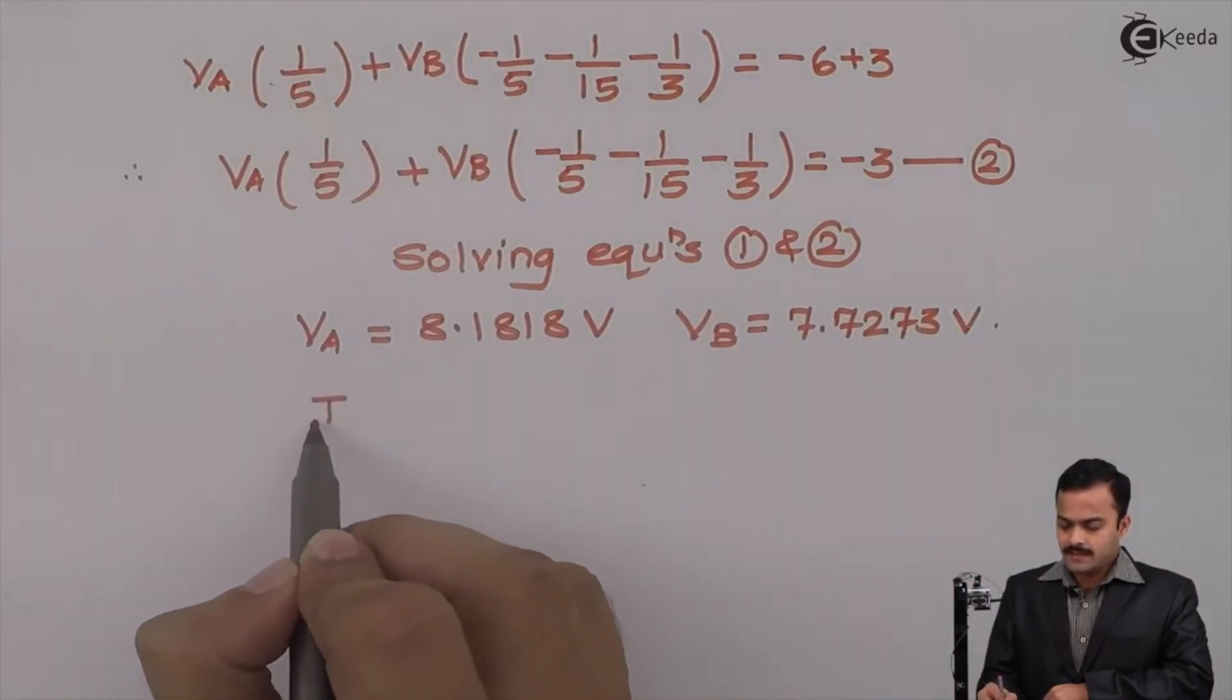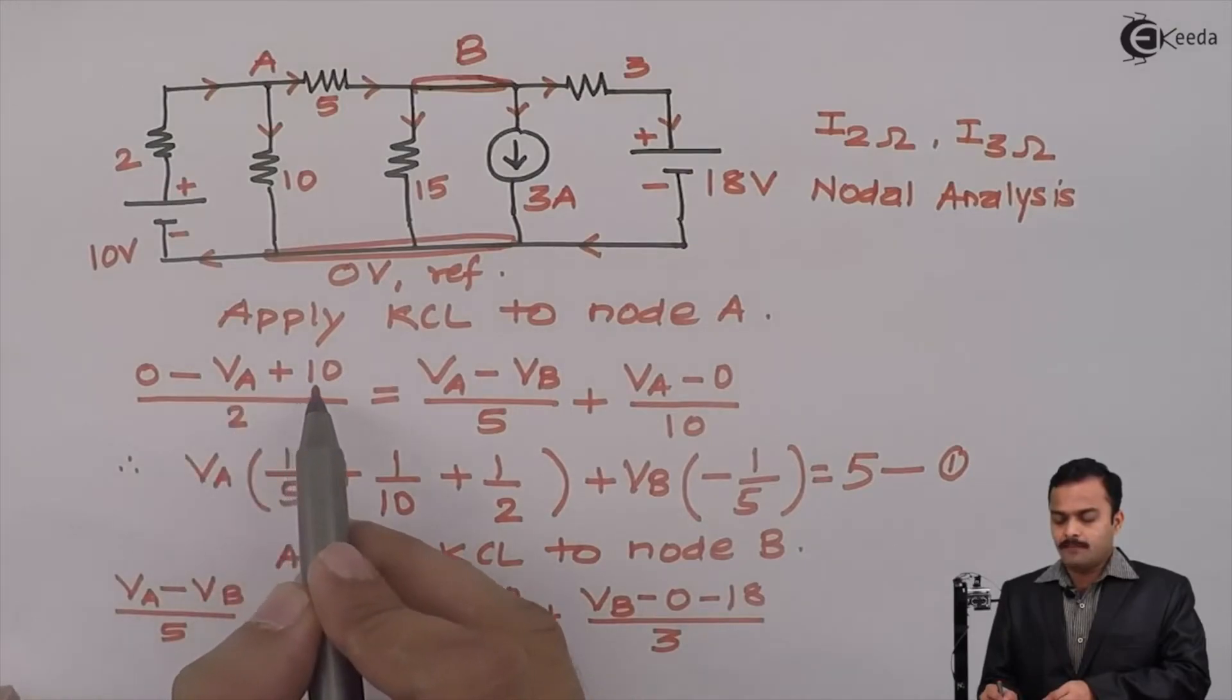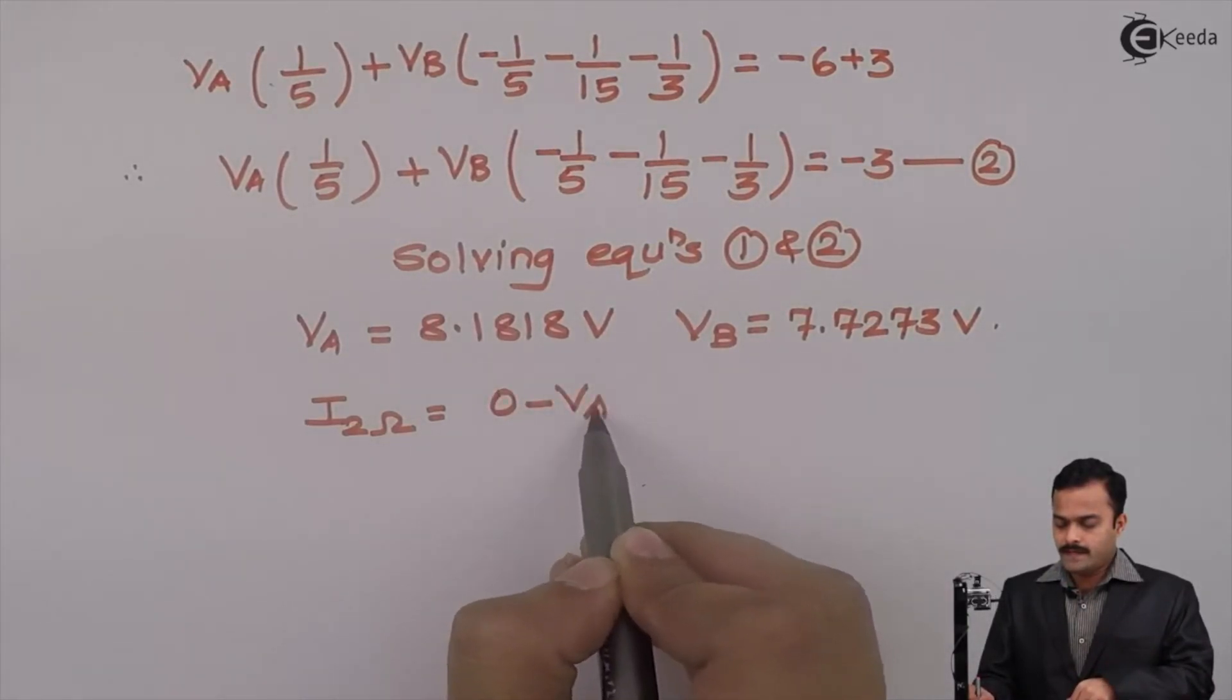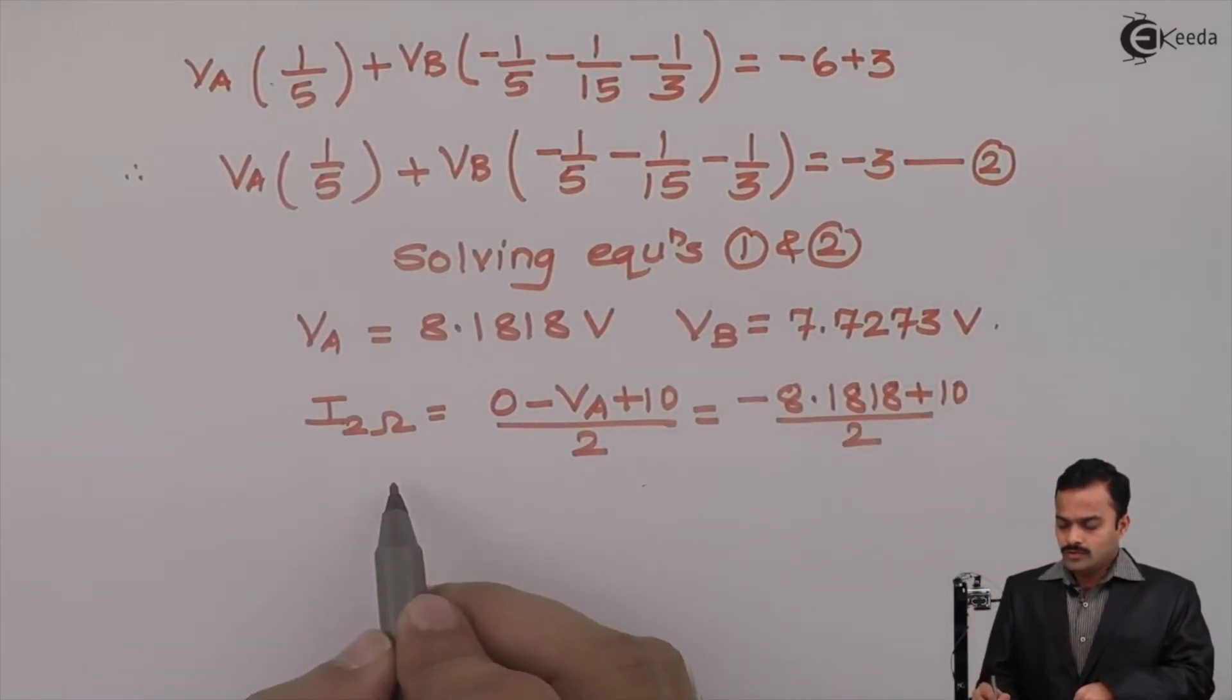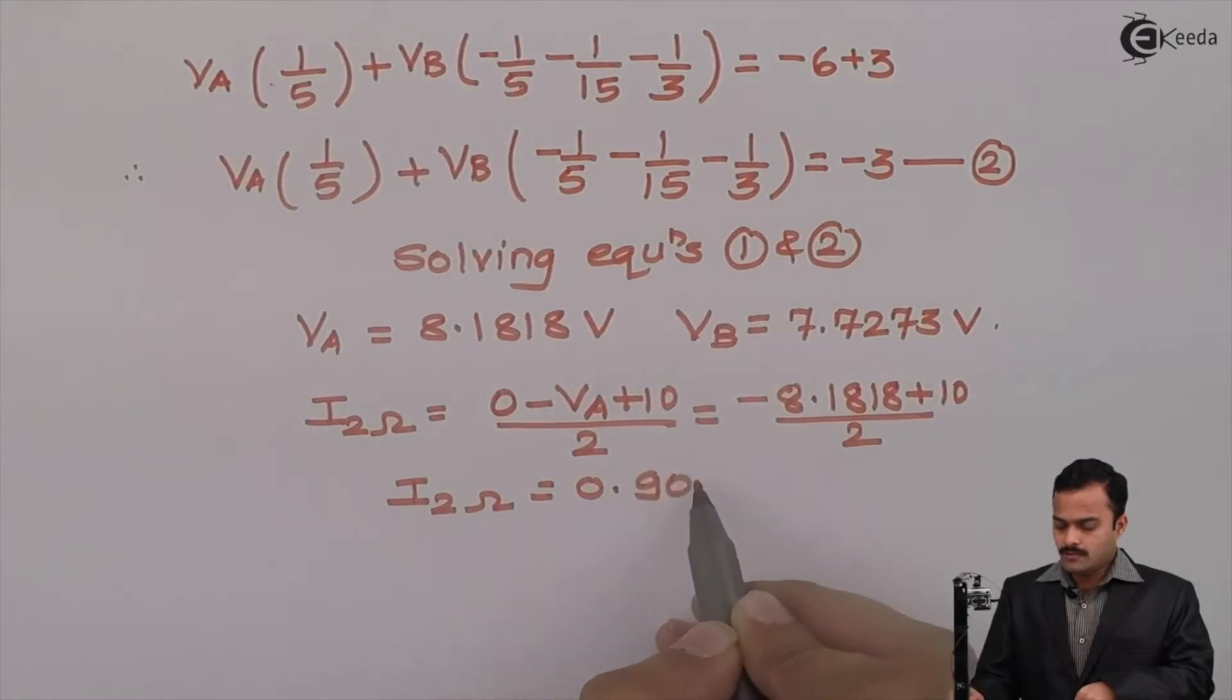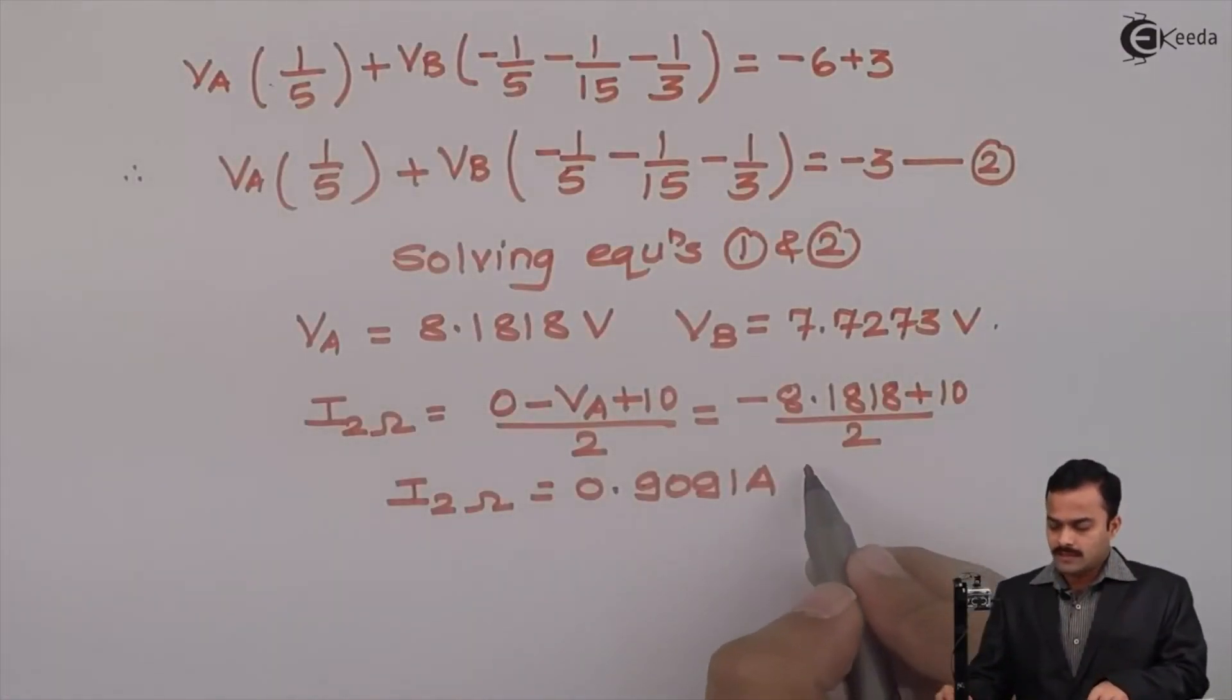Now objective is to get current flowing through 2 ohm. So let's go back to original circuit. Current flowing through 2 ohm we have written equation 0 minus VA plus 10 divided by 2. So this is equal to minus 8.1818 plus 10 divided by 2. So I will get current flowing through 2 ohm equal to 0.9091 ampere. And I am getting a positive answer meaning whatever current direction I have assumed is correct. So for 2 ohm the current direction is upward.